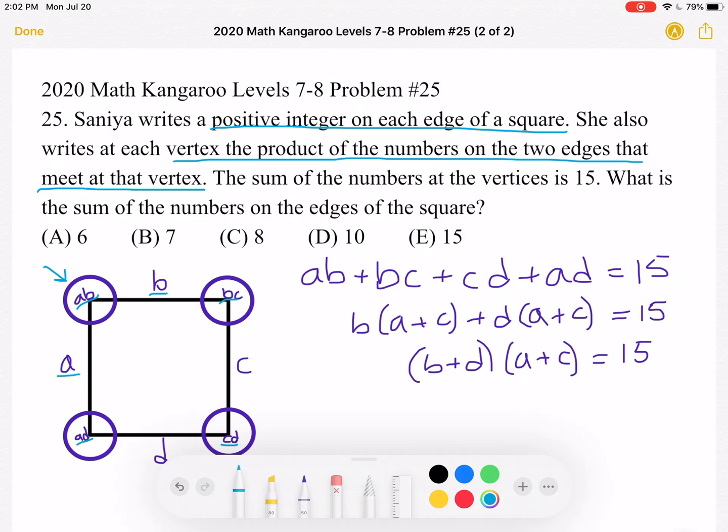CD, and AD. So we know that the sum of the numbers at the vertices is 15. This means that AB plus BC plus CD plus AD must be equal to 15.